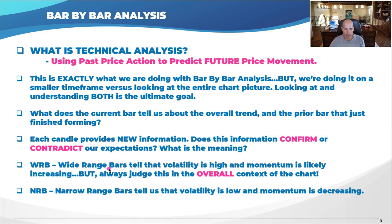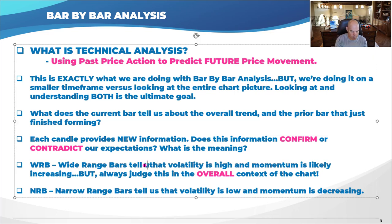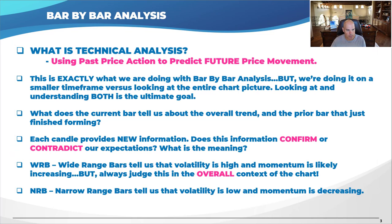New information changes our opinion. The question is whether it confirms or contradicts what we were expecting, and then what do we do about it? Wide-range bars tell us volatility is high and momentum is likely increasing. Always judge this in the context of the overall chart — you can't judge it in a vacuum. Narrow-range bars tell us volatility is low and momentum is decreasing.